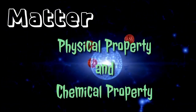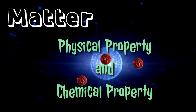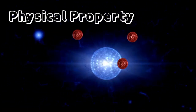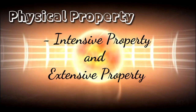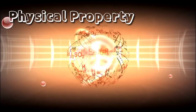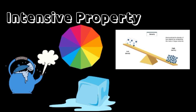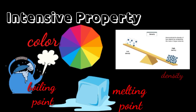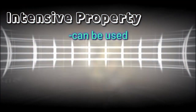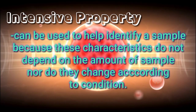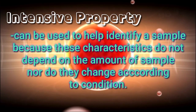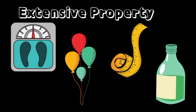Matter has different properties: the physical and chemical property. The physical property of matter can be observed or measured without changing the identity of the matter. It can be classified as intensive and extensive property. The intensive property does not depend on the amount of substance, such as color, melting point, boiling point, and density. Whether you have a little or a lot, this property stays the same. Intensive properties can be used to help identify a sample because these characteristics do not depend on the amount of the sample.